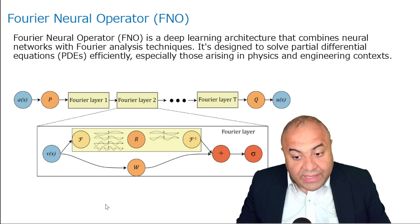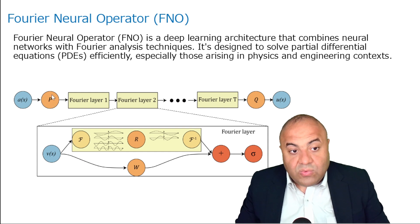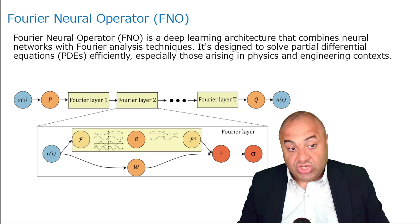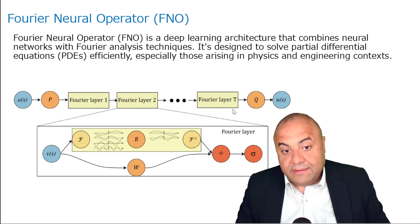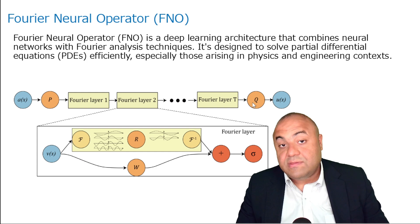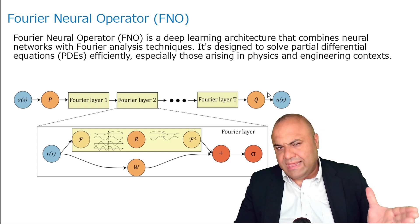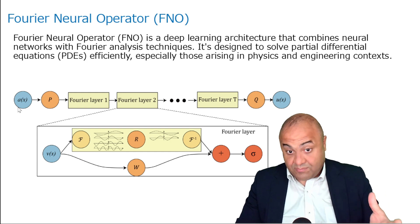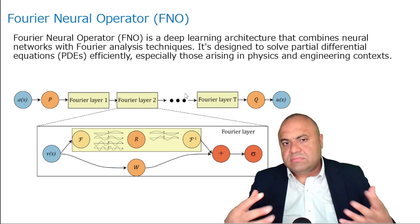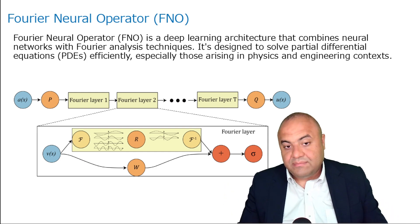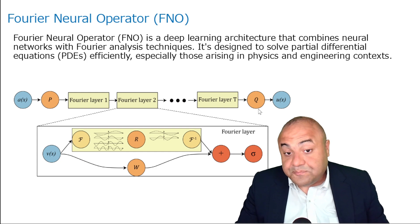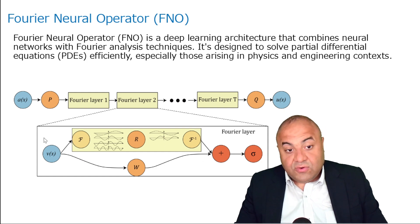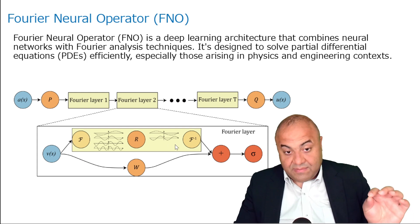So the Fourier Neural Operator uses this, and I will explain every part. We have an input, and a function P that changes the input to higher channels. Then we have the Fourier layers. After that, we have a decoder D that will decode something from latent space — basically a representation of the input initial condition — into a machine representation used in deep learning. Then U is the output that we want, and in between we have these Fourier layers.